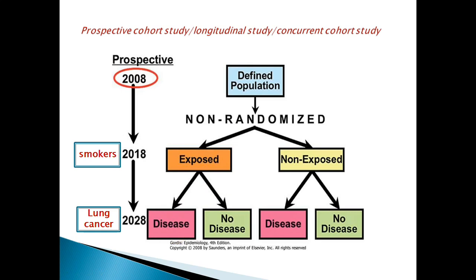Not all 100 people with smoking will develop lung cancer, and some of the 100 without smoking might develop it. But when we compare, the lung cancer development rate will be very high in the smoking group. That exposure will have a big impact in determining the outcome — that is what our hypothesis states, and we are trying to prove it.